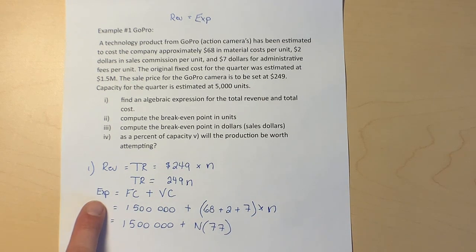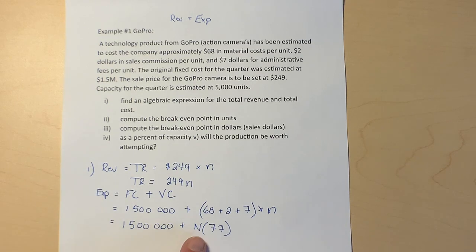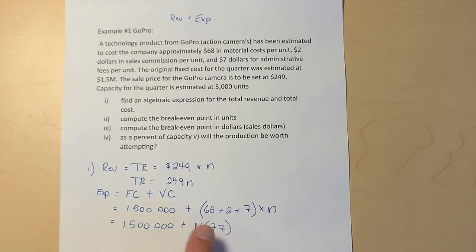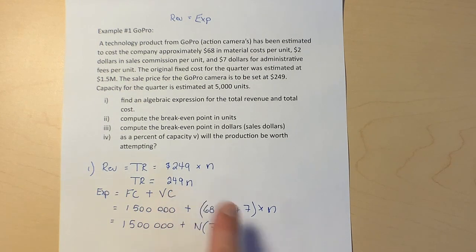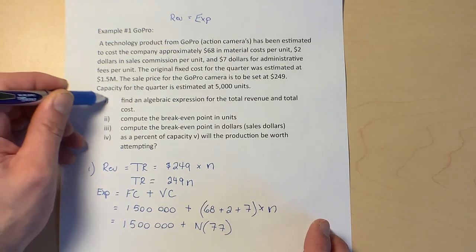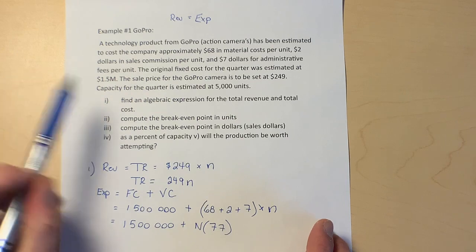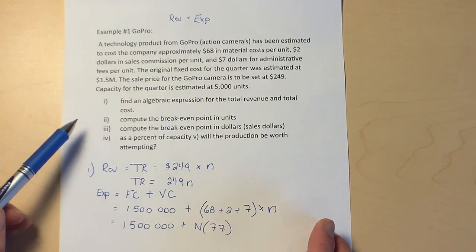Now we have a total expenses formula, an algebraic expression—so that means it includes letters—an algebraic expression for total costs which includes fixed and variable costs, and we have an algebraic expression for revenue, 249n. So we've figured out part one.